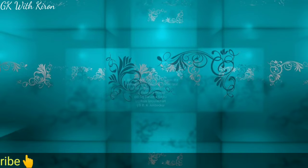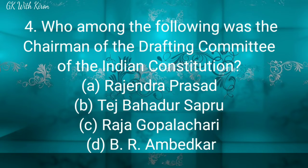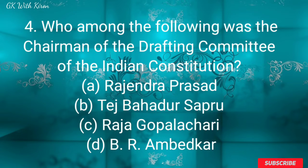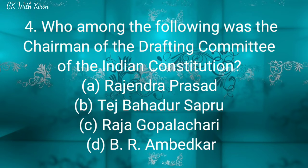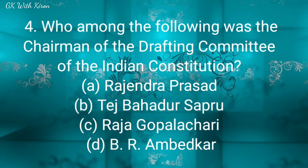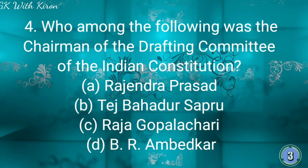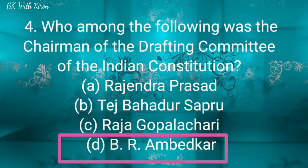Question four: Who among the following was the Chairman of the Drafting Committee of the Indian Constitution? Option A: Rajendra Prasad, option B: Tej Bahadur Sapru, option C: Rajagopalachari, and option D: B.R. Ambedkar. The correct answer is option D: B.R. Ambedkar.